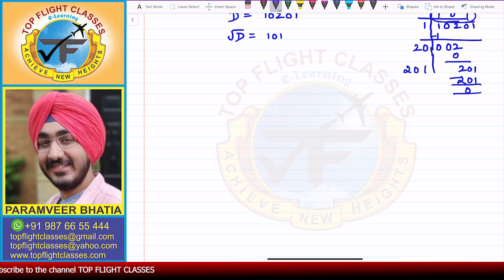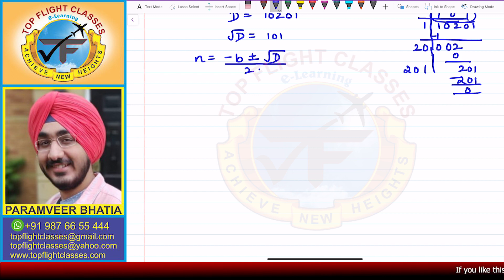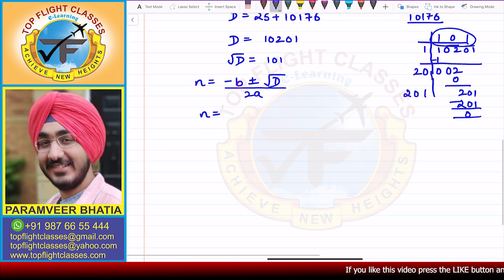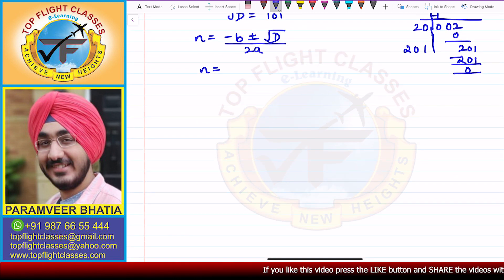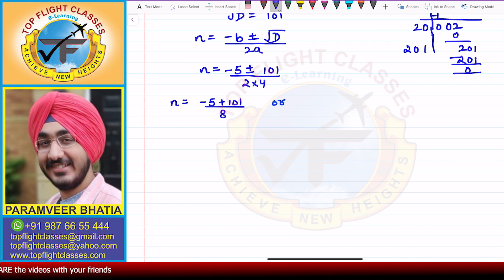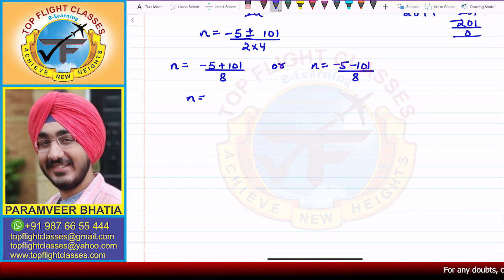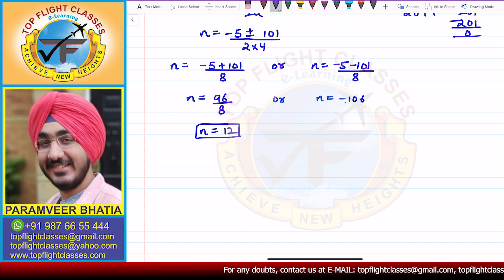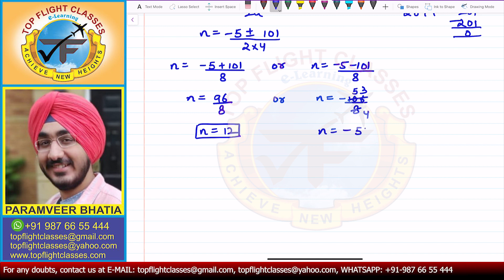Applying the quadratic formula N = (minus B ± √D) / 2A, we get N = (minus 5 ± 101) / (2 into 4). The first value: N = (minus 5 + 101) / 8 = 96/8 = 12. The second value: N = (minus 5 minus 101) / 8 = minus 106/8 = minus 53/4.